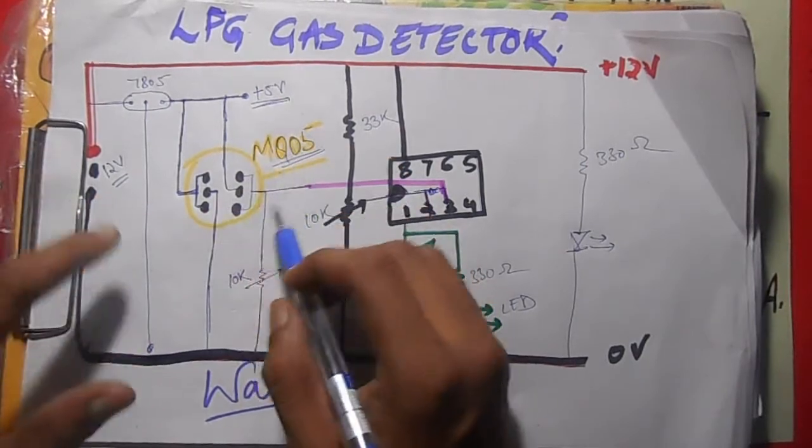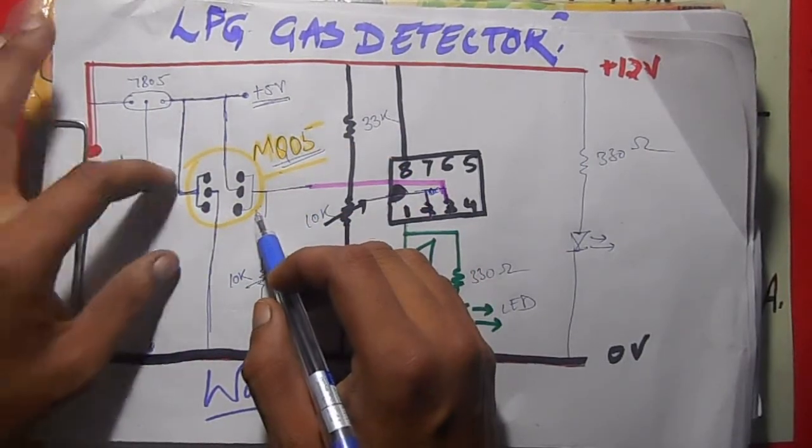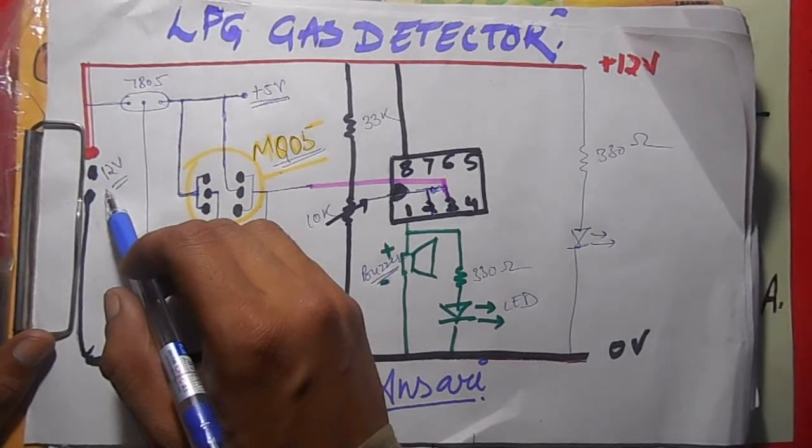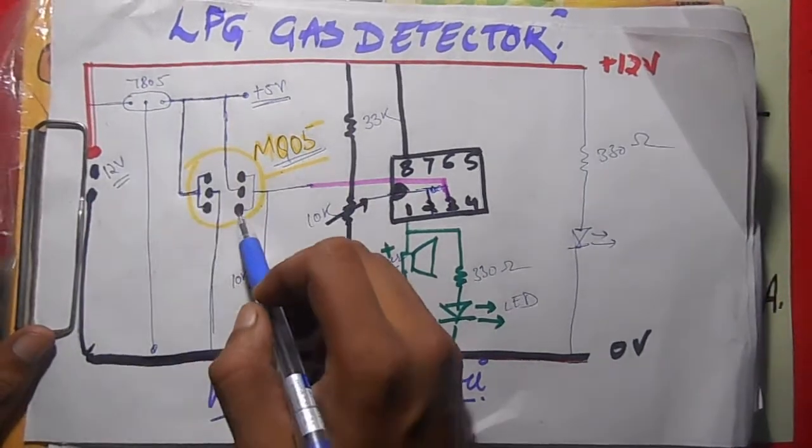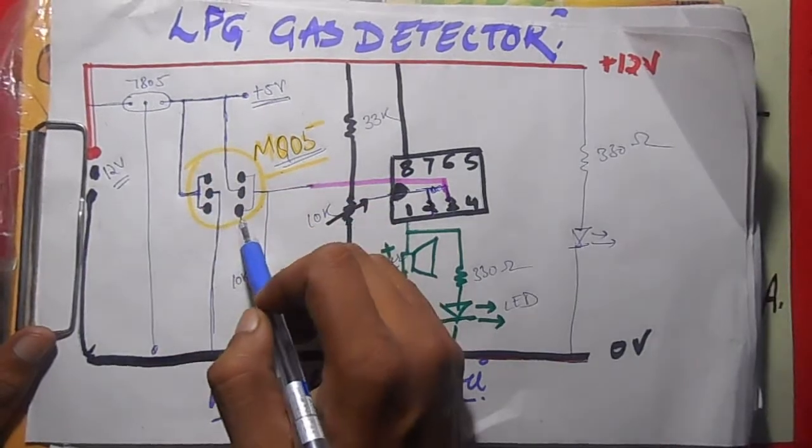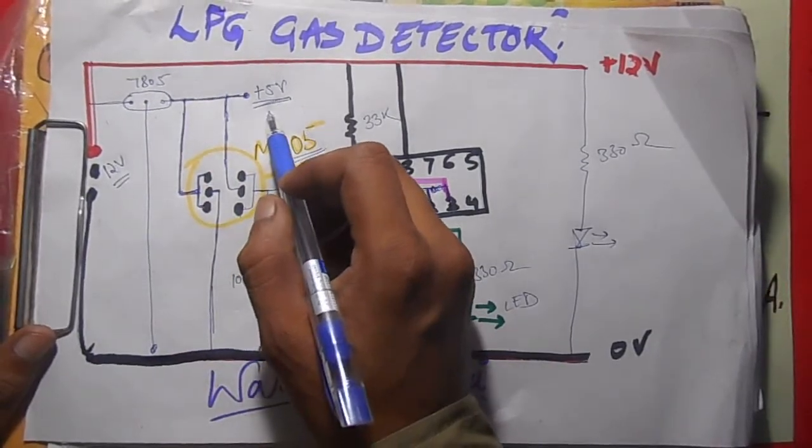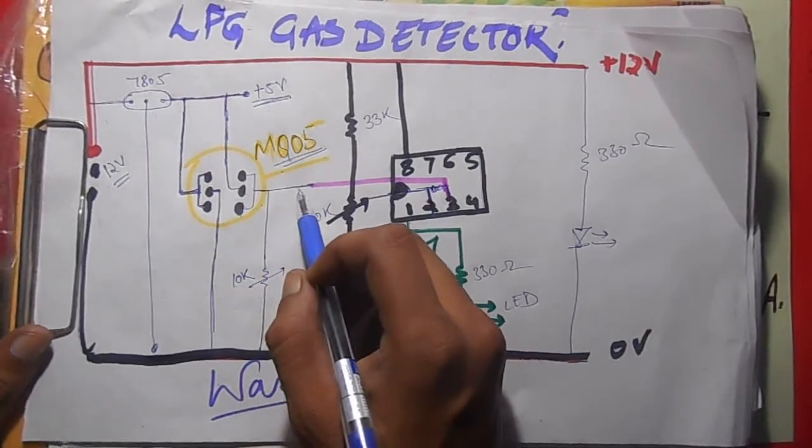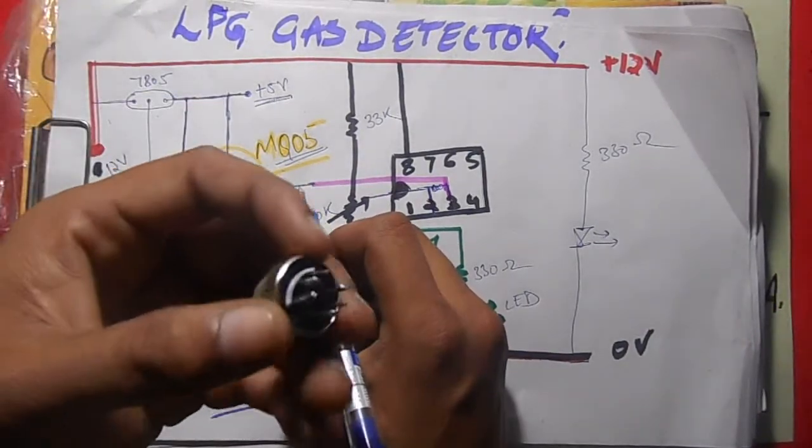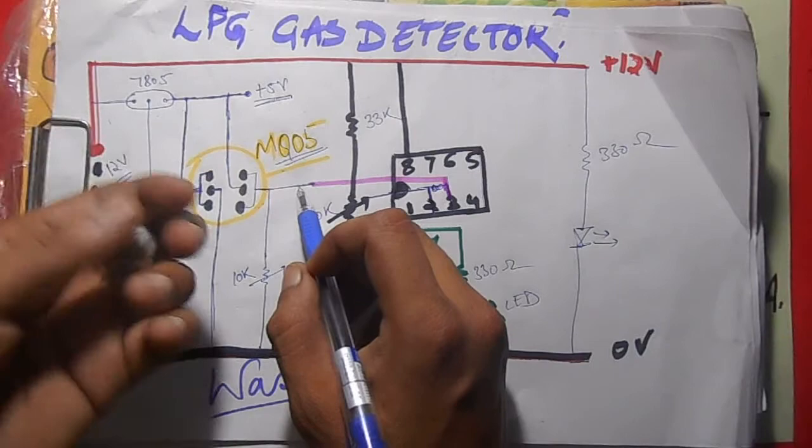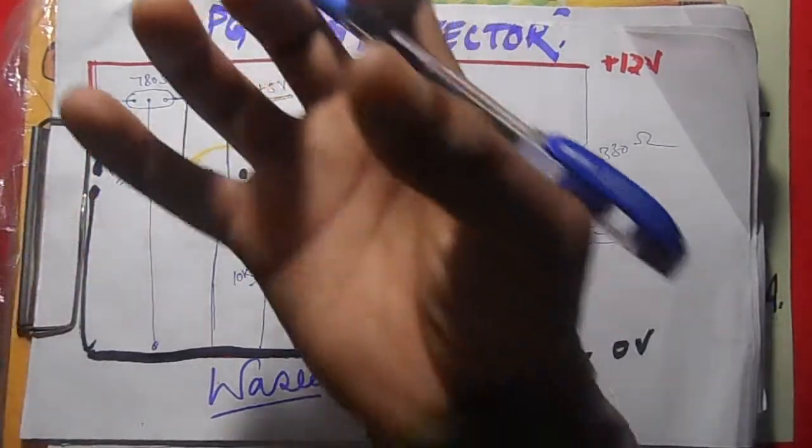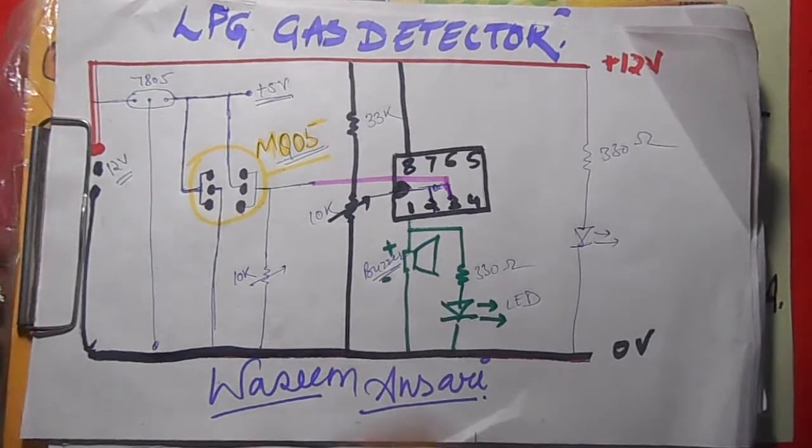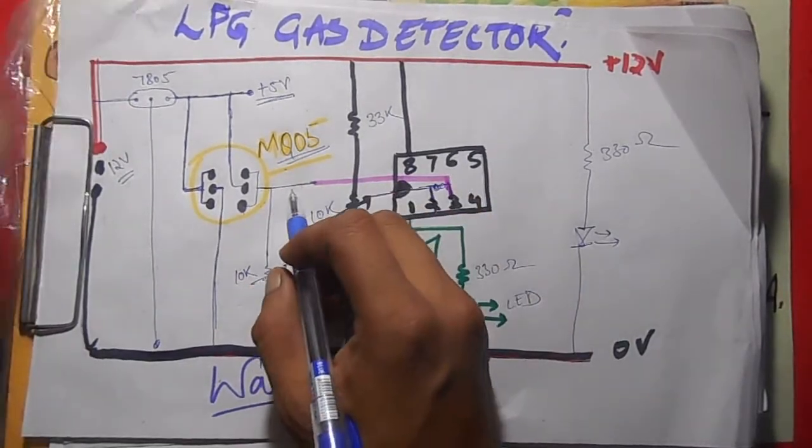So here this is the circuit diagram of MQ05 sensor. Here we are providing it a regulated power supply. 12 volt DC supply is given to the main circuit and MQ05 sensor circuit. To the sensor circuit we are providing 5 volt power supply. The signal which is high is obtained when there is LPG gas, when the concentration of gas is above 1000 ppm, then it sends a high pulse.